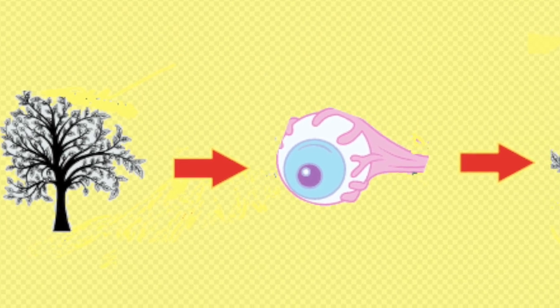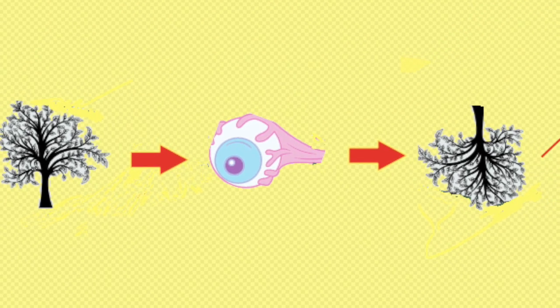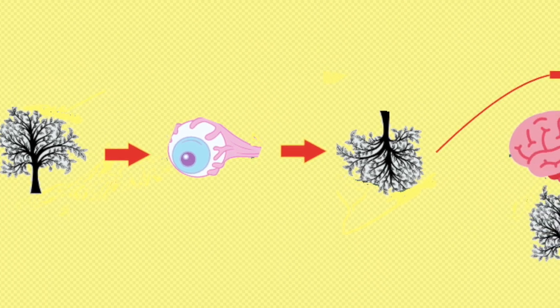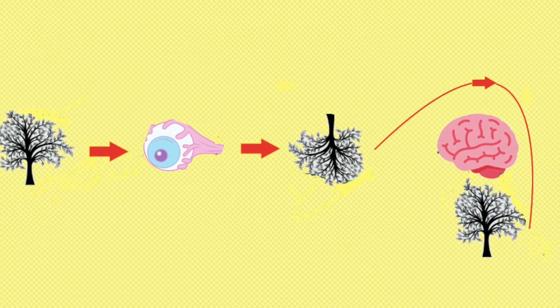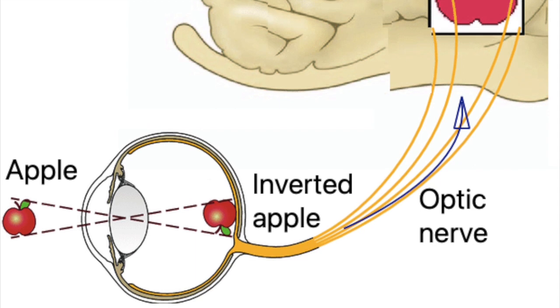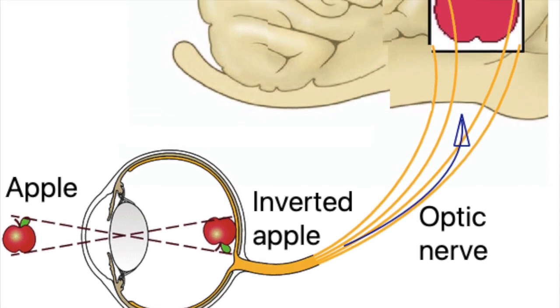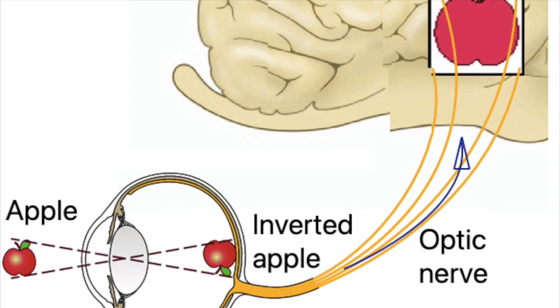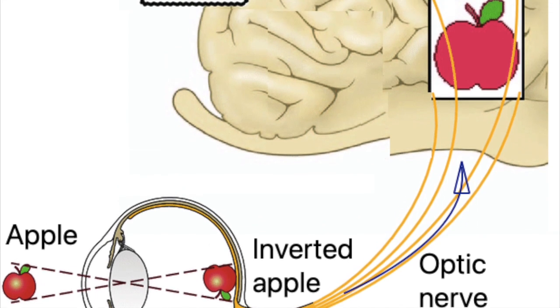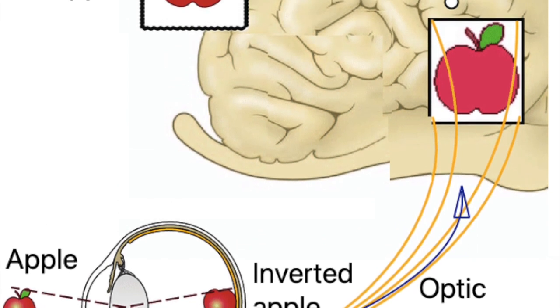The light then reaches the back of the eye and hits the retina. The retina translates the light into electrical impulses, which are then carried to the brain by the optic nerve. Finally, the visual cortex of the brain interprets these impulses as what we see every day.